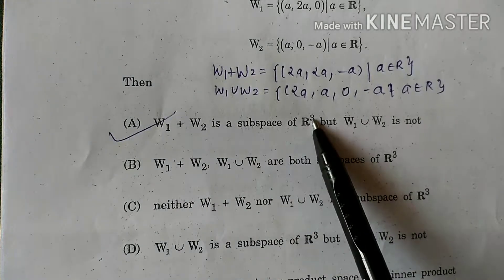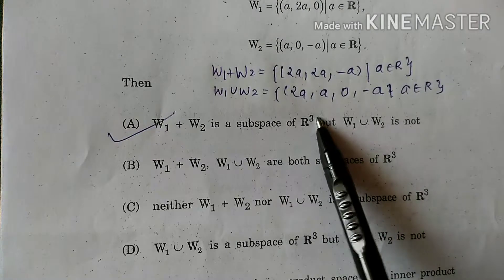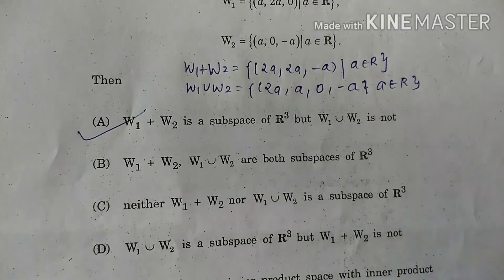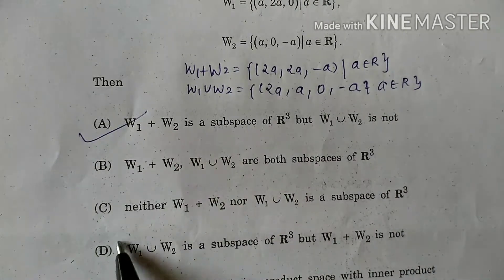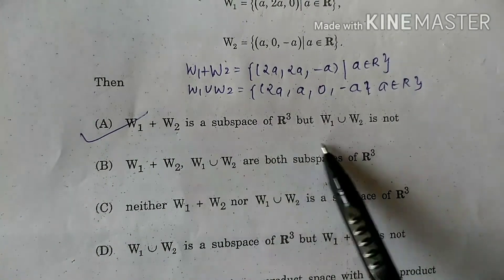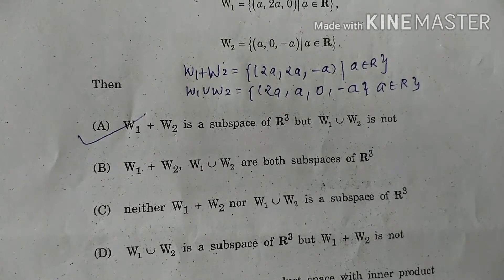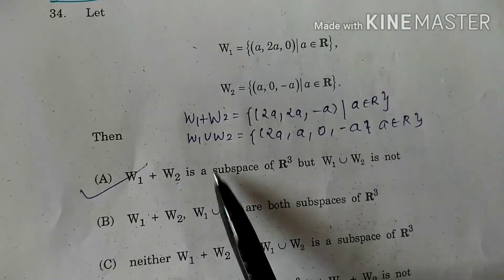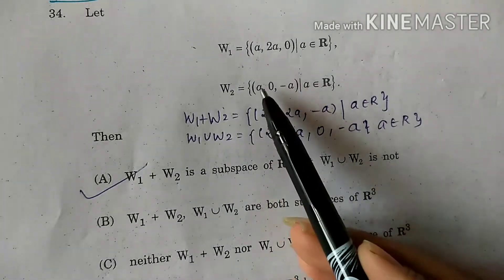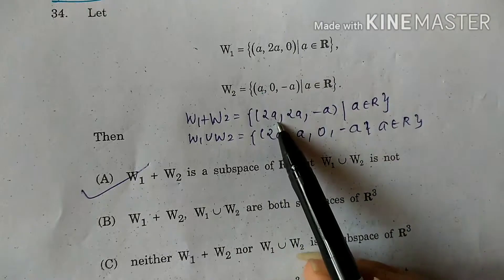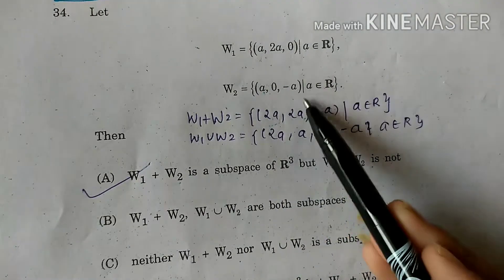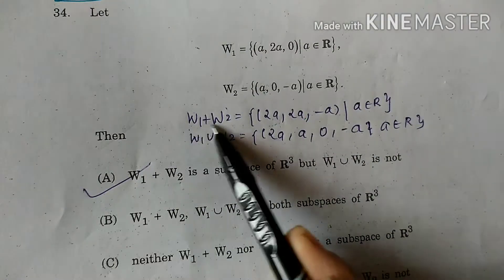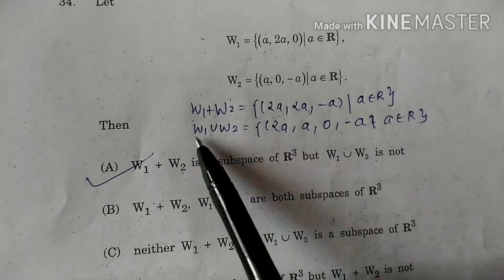Here W1 plus W2, union of it. First of all we are going to compute W1 plus W2. So a and a will be 2a, 2a plus 0 will be 2a, 0 plus minus a will be minus a. So when we define W1 plus W2, it will be equal to this.